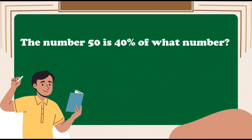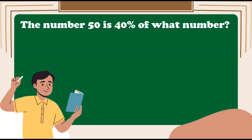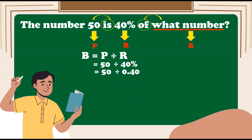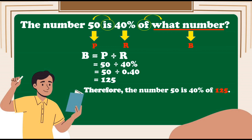Let us try another one. Identify the missing term: the value with a percent sign is the rate, the number beside 'is' is the percentage, and the value after 'of' is the base. This means we are looking for the base. The formula is: Base is equal to percentage divided by rate — 50 divided by 40%. Before we divide, change the percent to decimal: 50 divided by 0.40. Dividing gives us 125. Therefore, 50 is 40% of 125.